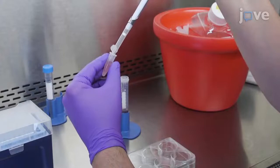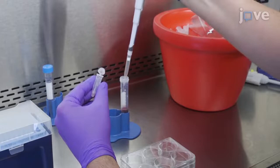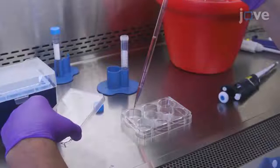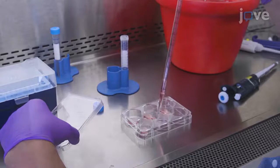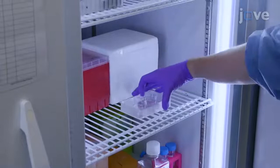To begin, combine 100 microliters of matrix with 5.9 milliliters of ice-cold Dulbecco's Modified Eagle Medium F12 media in a 15 milliliter conical tube. Coat each well in a 6-well plate with 1 milliliter of the membrane matrix. Wrap the plate in paraffin film and store overnight at 4 degrees Celsius.